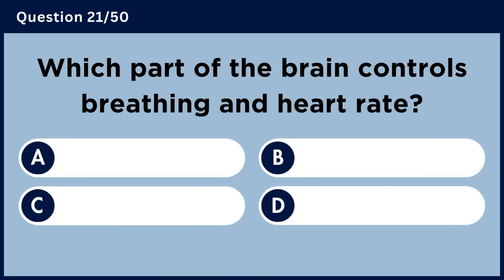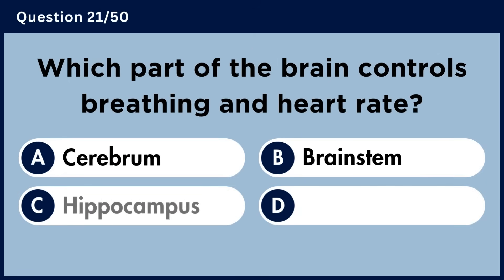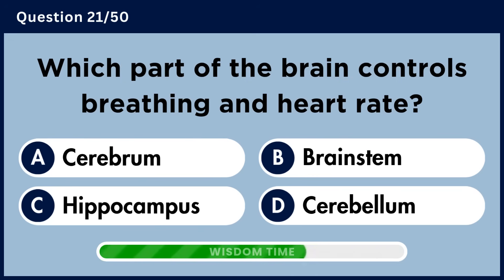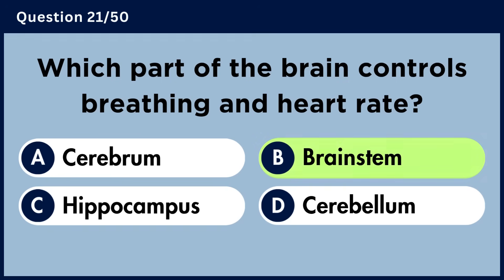Which part of the brain controls breathing and heart rate? Answer B: Brainstem.